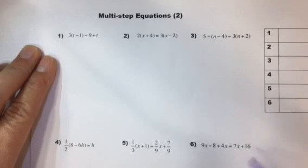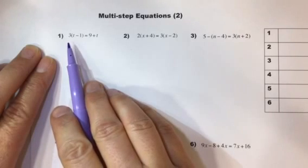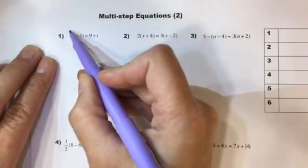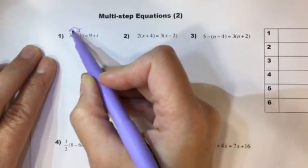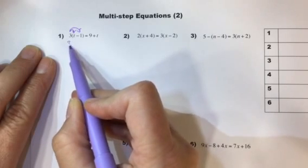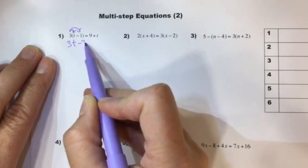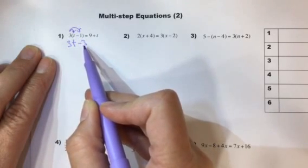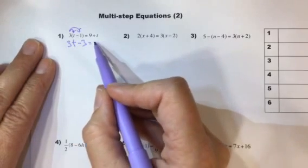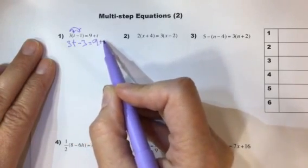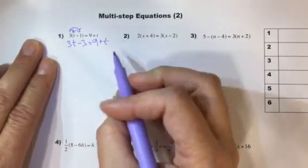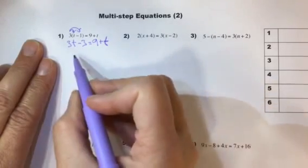So in number one we have a situation where you need to use distribution. If 3 is multiplied by the difference between t and 1, you need to multiply 3 by both t and by negative 1. So this one is going to be 3t minus 3 because 3 times t is 3t and 3 times negative 1 is negative 3. I know you probably know that but I just like to kind of restate it in case anyone is still not exactly sure. And then this side of the equation is going to stay the same, 9 plus t. That's a t. I know it doesn't look like it.